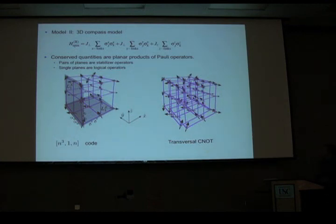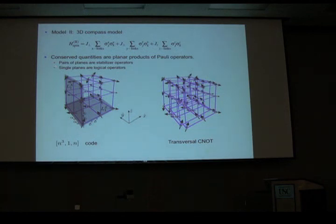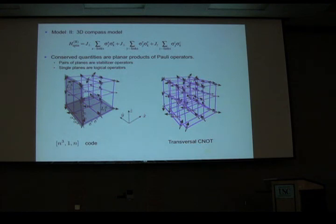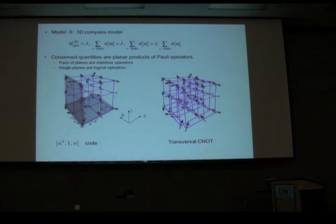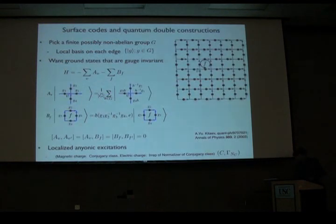There's an extension to 3D: the 3D compass model with XX, YY, and ZZ interactions. The conserved quantities are now planar operators, and logical operators correspond to, for instance, a plane of Z operations in the XY plane. If we choose an N-by-N-by-N lattice where N is odd, these planar operators collide at an even number of spins, so they anti-commute. This can be described as an N-cubed, one, N code. CNOT operations could be done transversely by having a cube within another cube.